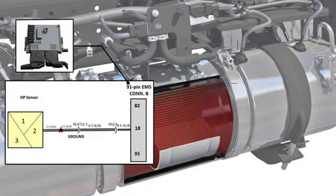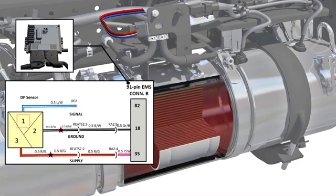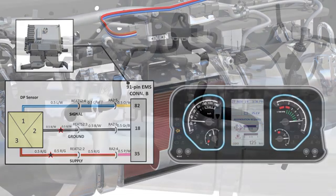Pin 3 receives supply voltage of 5 to 5.5 volts from pin 35 of EMS and sends signal through pin 1 to pin 82 of EMS. Pin 2 is ground at pin 18 of EMS. The sensor output is used to monitor and detect blockage, voltage, and degradation of the diesel particulate filter. Warning: DTC will be created in case the pressure tubes of the DP sensor are interchanged during sensor installation.